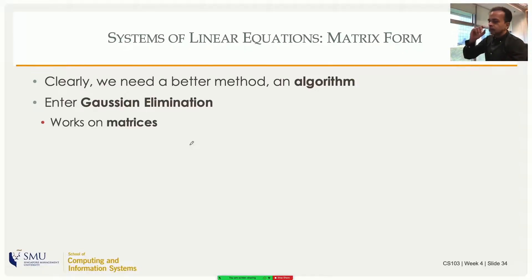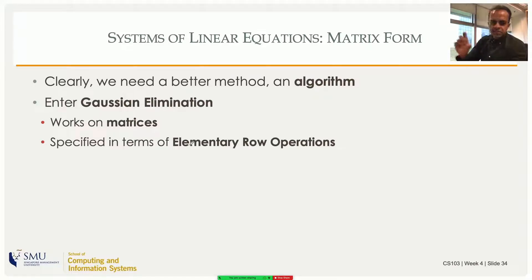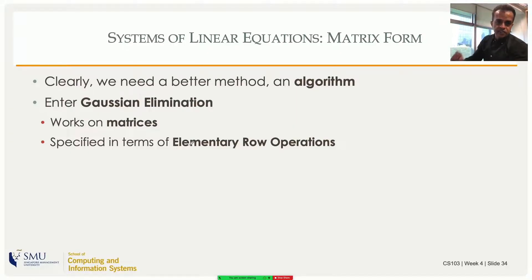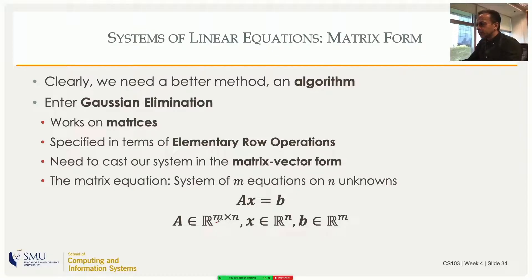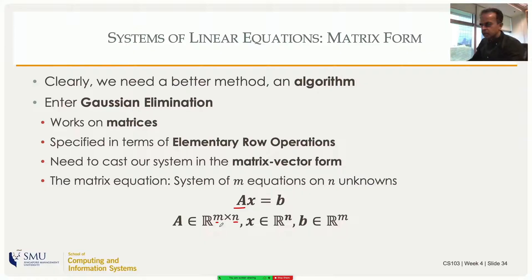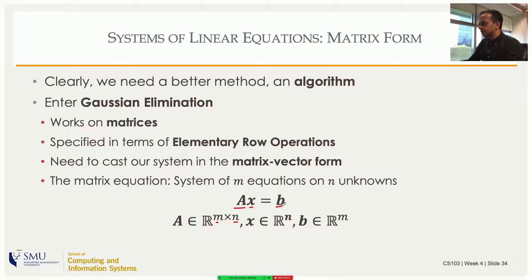That algorithm is called Gaussian elimination. As you know, a system of linear equations can be written as a matrix equation. On the matrix we can define certain operations called elementary row operations. If you have m equations and n unknowns, you create a matrix A with m rows and as many columns as unknowns, and write x — your unknowns x1, x2, x3, etc. — equal to a constant vector: Ax = b.